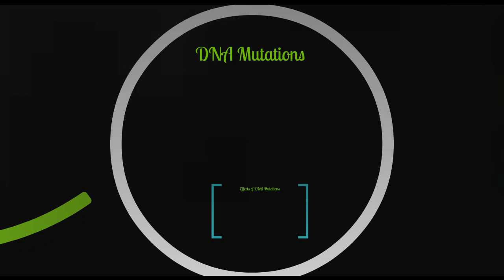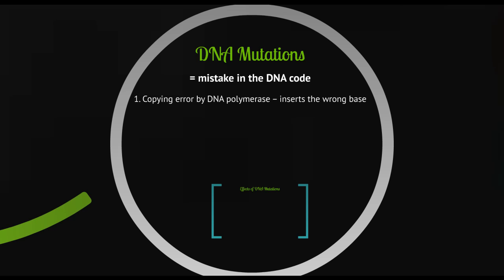We know a little bit about the DNA code and how it works and how it's regulated, but one of the things we need to talk about is when something goes wrong with that code. Back when we talked about evolution, we defined a mutation as a small change in the DNA code, but now I want to talk a little bit more about those mutations. A DNA mutation is a mistake in the DNA code, and it can happen in a couple of different ways.